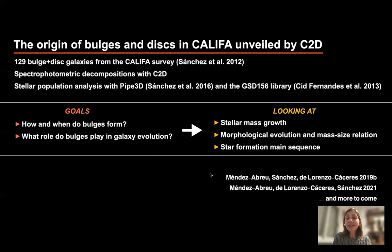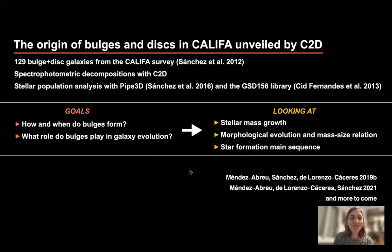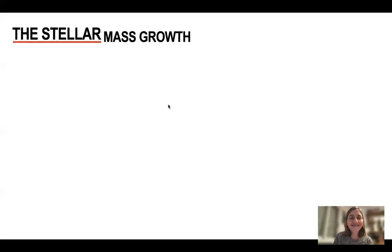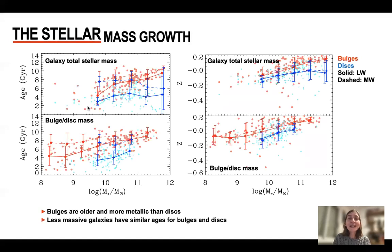Most of these results are already published in these publications here, but some of them are new, so I invite you to stay tuned for more publications in the future. Stellar mass growth: in these plots, what we can see is age on the y-axis — or metallicity — against mass.